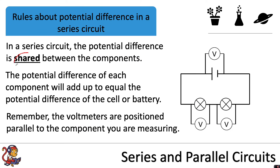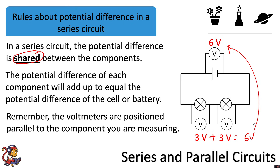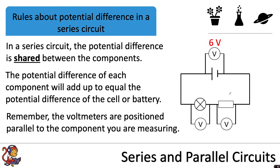If our total potential difference provided by the cell was 6 volts and we've got two of the same components — two lamps — this will be shared equally, so 3 volts to the first and 3 volts to the second, adding up to make 6 volts. In a different circuit with two different components — a lamp and a resistor — the potential difference might be shared unequally but will still add up to 6 volts. For example, if the potential difference across the lamp was 2 volts, the potential difference across the resistor would be 4 volts.